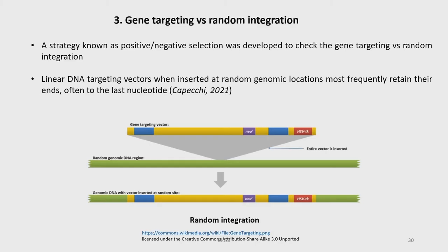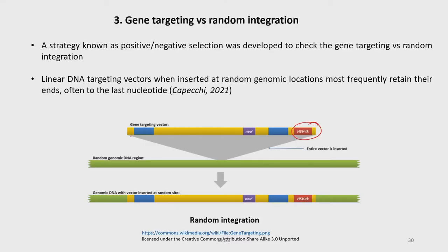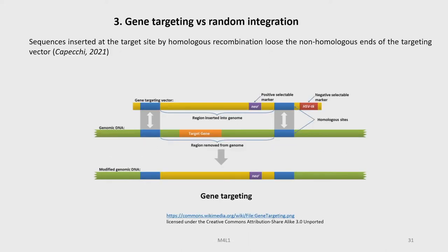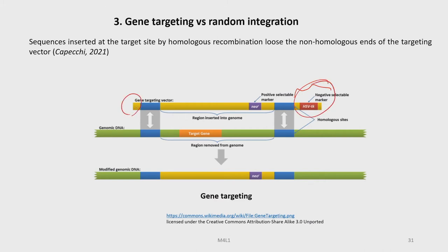Let us now discuss gene targeting versus random integration. A strategy known as positive-negative selection was developed to distinguish gene targeting from random integration. Linear DNA targeting vectors when inserted at random genomic locations most frequently retain their ends, often to the last nucleotide. Sequences inserted at the target site by homologous recombination, on the other hand, lose the non-homologous ends of the targeting vector.